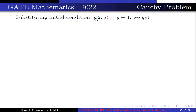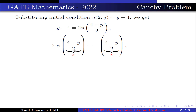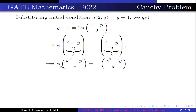Now substituting the initial condition u(2, y) = y − 4, we get y − 4 = 2·φ((4 − y)/2), which gives φ((4 − y)/2) = (y − 4)/2 = −(4 − y)/2. Setting t = (4 − y)/2, this implies the value of φ(t) = −t, so φ(x² − y)/x = −(x² − y)/x, which simplifies to (y − x²)/x.